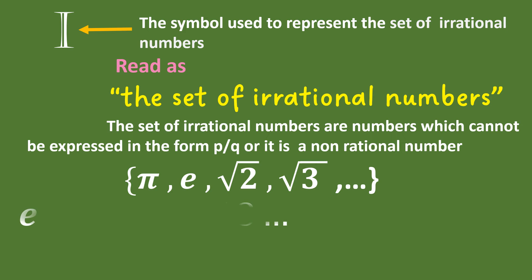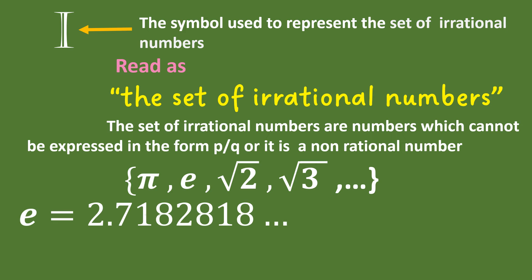e is equal to 2.7182818. It is also called Euler's number.